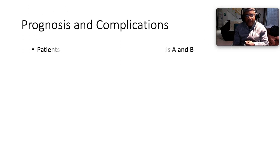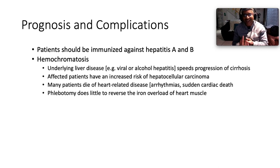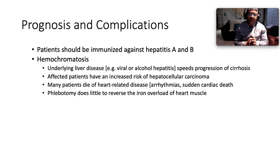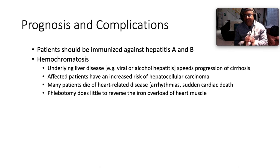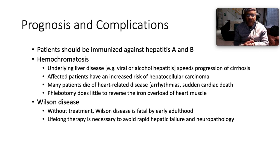All patients should be immunized against hepatitis A and B. In hemochromatosis, any underlying liver disease — viral, alcoholic hepatitis, NASH, or NAFLD — will expedite progression to cirrhosis. Affected patients have an increased risk of hepatocellular carcinoma. Many patients die of heart-related disease including arrhythmia and sudden cardiac death. Importantly, phlebotomy does very little to reverse the iron overload of heart muscle. In Wilson disease, without treatment the disease is fatal in early adulthood; lifelong copper chelation therapy is necessary to avoid rapid hepatic failure and further neuropathology.